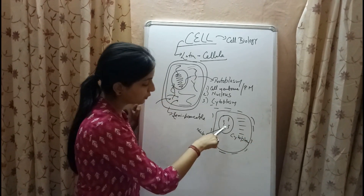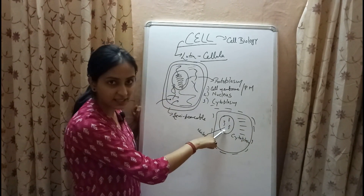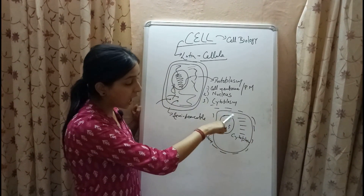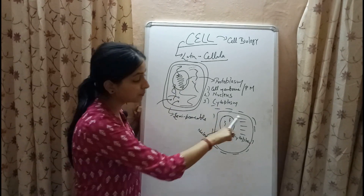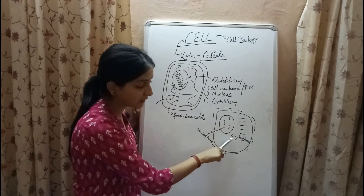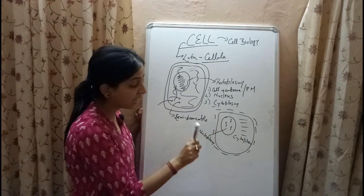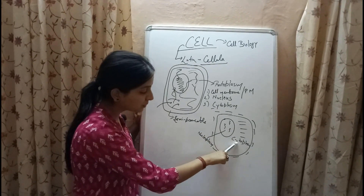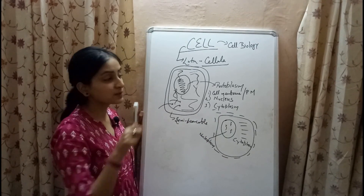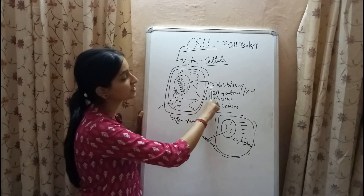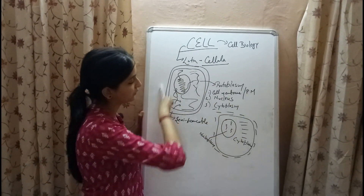The nucleoplasm is inside the nucleus. Outside the nucleus but within the plasma membrane we have cytoplasm. Cytoplasm and the nucleus together form the protoplasm, which is the living component of the cell.